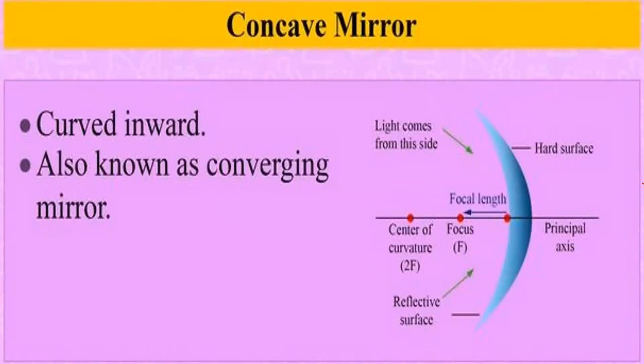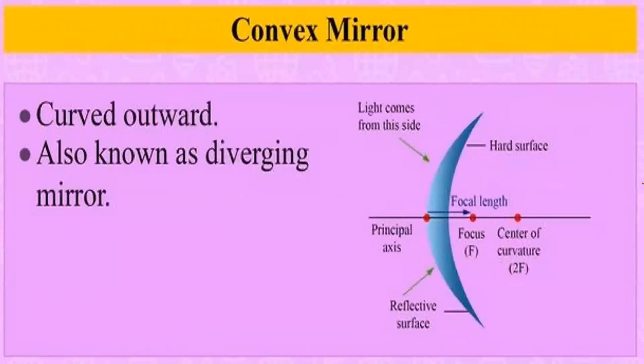The concave mirror is curved inwards and is also known as a converging mirror. The convex mirror is curved outwards and is also known as a diverging mirror. Convergence means parallel rays of light actually meet at a point after reflection. Divergence means parallel rays of light appear to come from a common point after reflection.